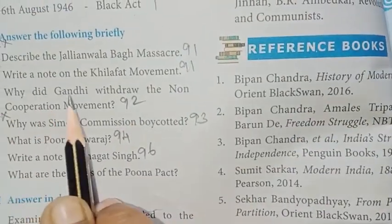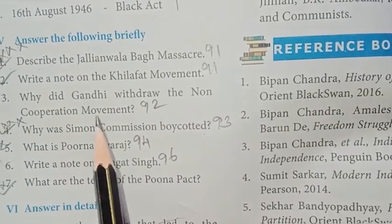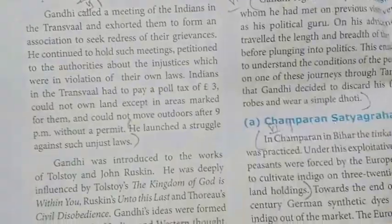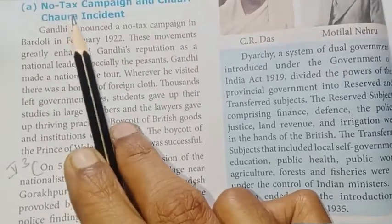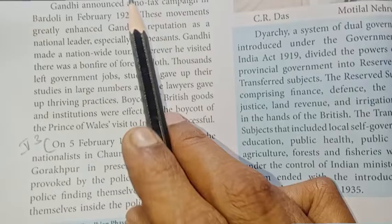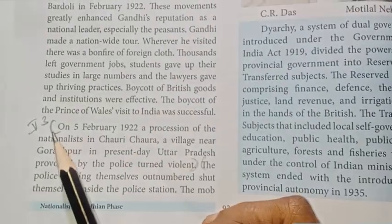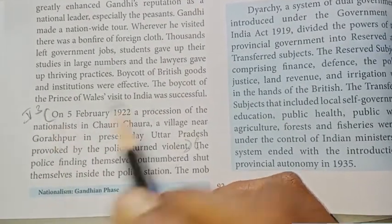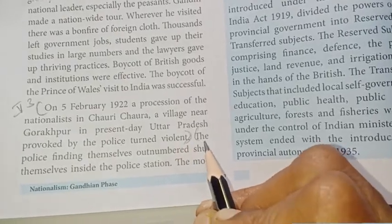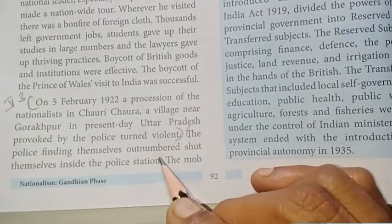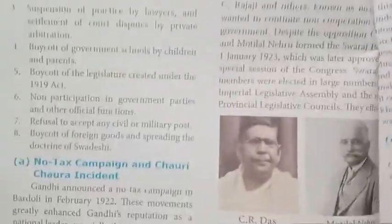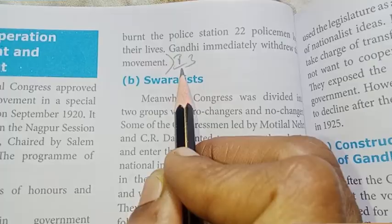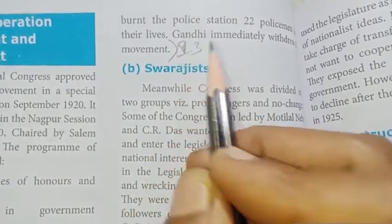Third: Why did Gandhi withdraw the non-cooperation movement? Page 92. See: No tax campaign and Chauri Chaura incident. Second paragraph: On 5th February 1922, there was violence. First point: The police firing at the police station. Second point: The mob. Third point: reason for withdrawal. Three points total.